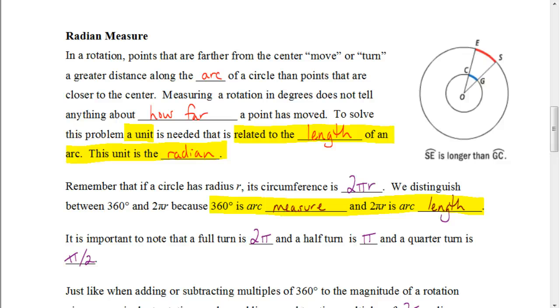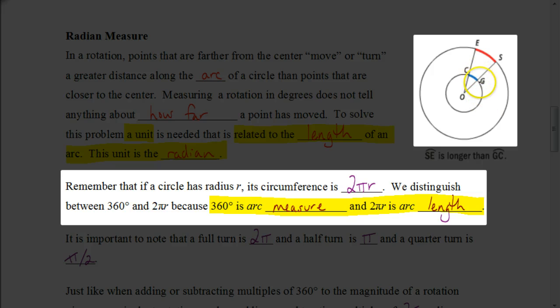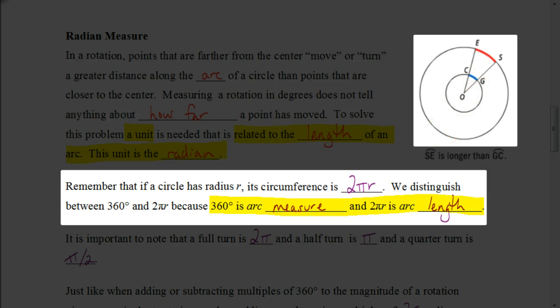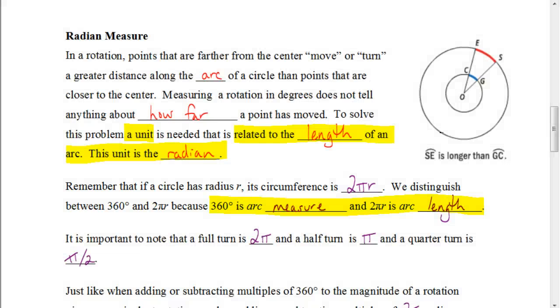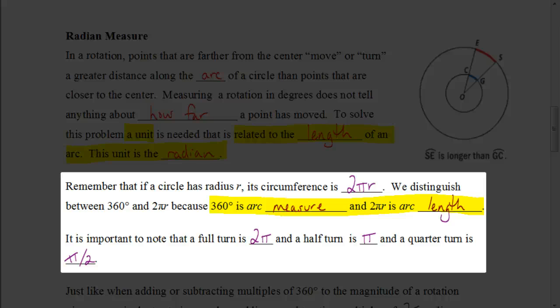The circumference of a circle — the distance all the way around — is 2 times pi times the radius. So 360 degrees refers to one full rotation, and the distance traveled would be 2πr, giving us the arc length. When we're working with radians, we often work with the unit circle, where the radius is 1. So the circumference becomes 2 times pi times 1, which is just 2π.